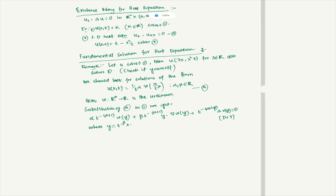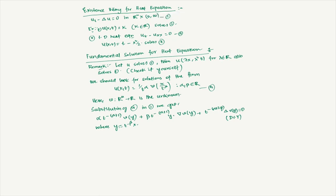Here β is a problem: if 2β = 1, then all the t-exponents become −α+1, and we can factor out t^(−α+1). If we do that, the equation transforms into: α V(Y) + (1/2) Y · ∇V(Y) + ΔV(Y) = 0.